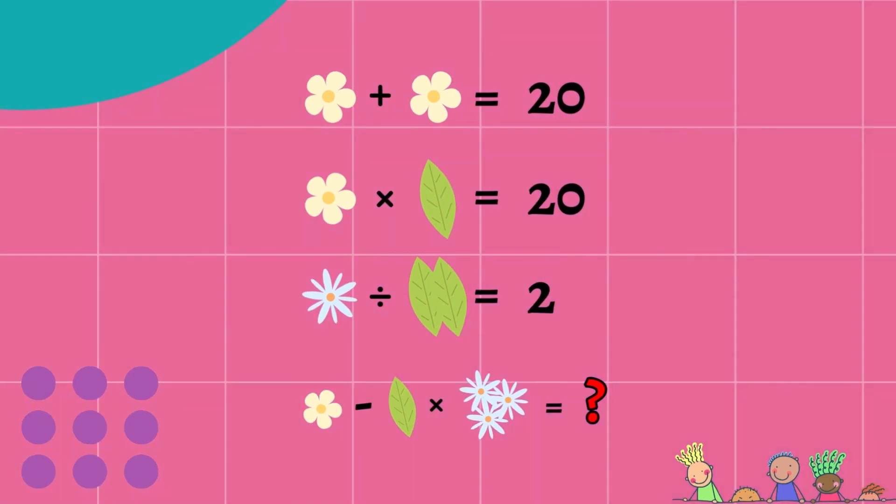Now if that wasn't enough, you're getting hit with another challenging brain teaser. This will require some mental math skills on your part. Are you up for it? Let's start with the top line. Flower plus flower equals twenty. If two flowers equal twenty, that means that one flower is equal to ten. Easy. Now that we know that the flower is equal to ten, we can plug it into the second equation: ten times leaf equals twenty. If ten leaves are equal to twenty, then one leaf is equal to two.